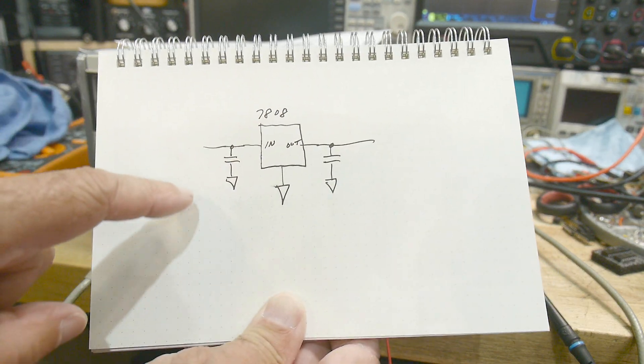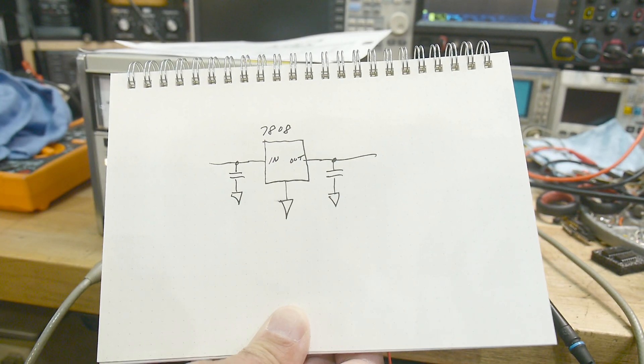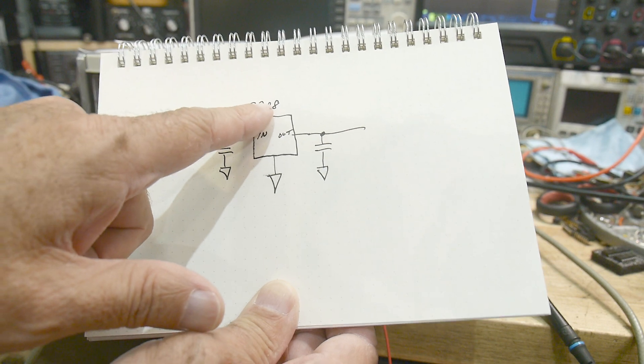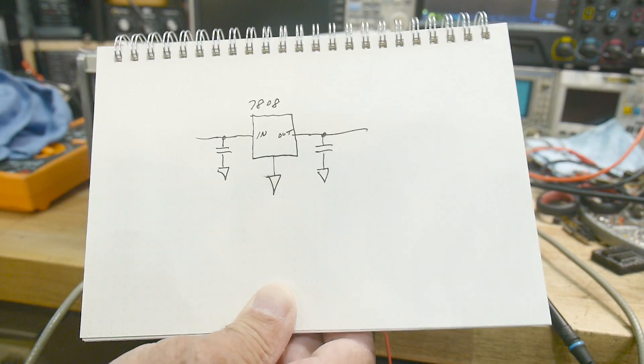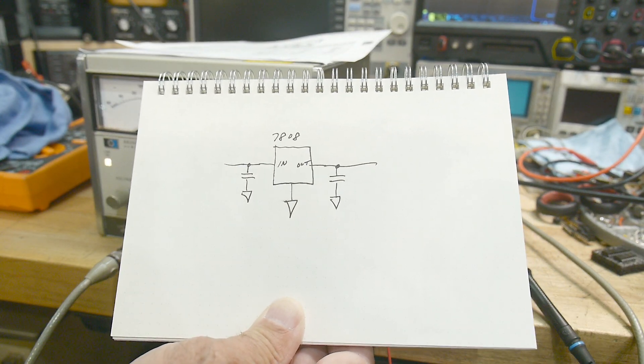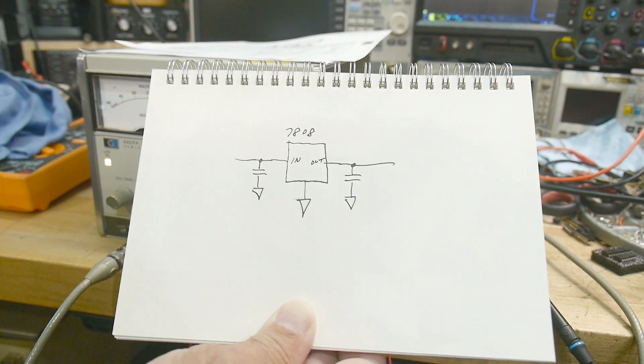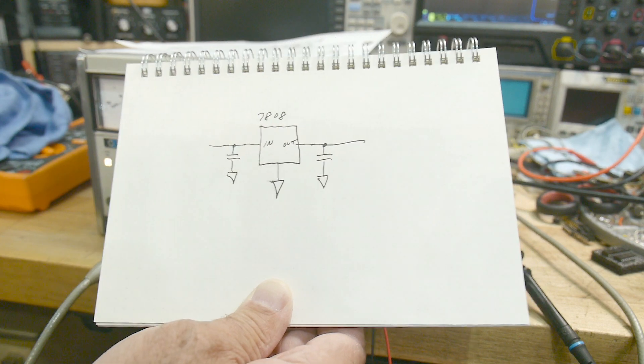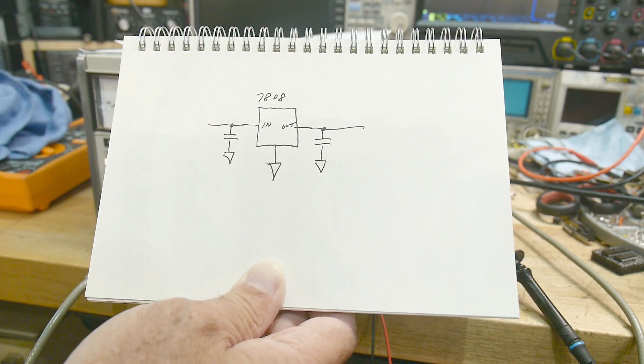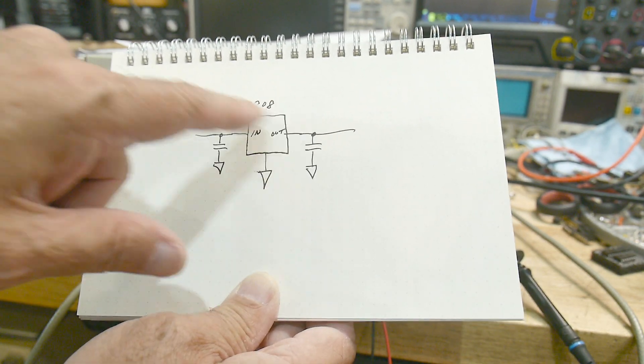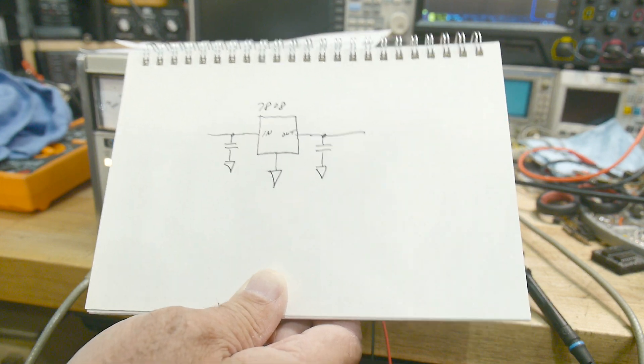I have a whole bunch of 7808s, so if I blow them up I don't care. So we'll just use that 7808. Something like 10 volts in, 8 volts out. Usually you have maybe a 2-volt dropout on these things. You want about a 2-volt headroom on the input to the output, but we'll test that today.